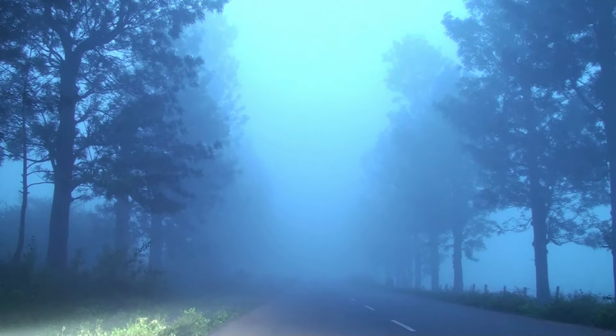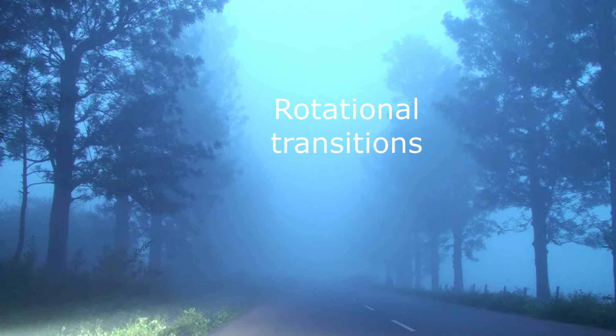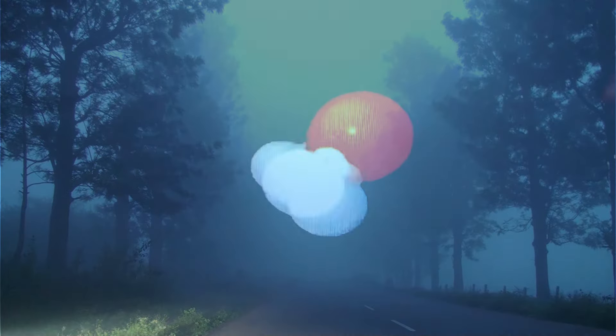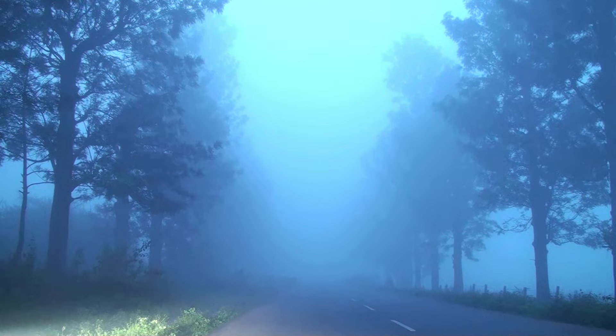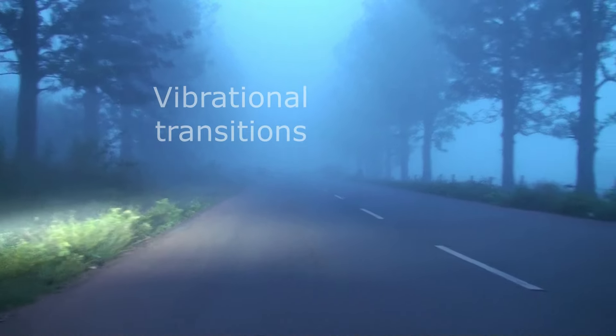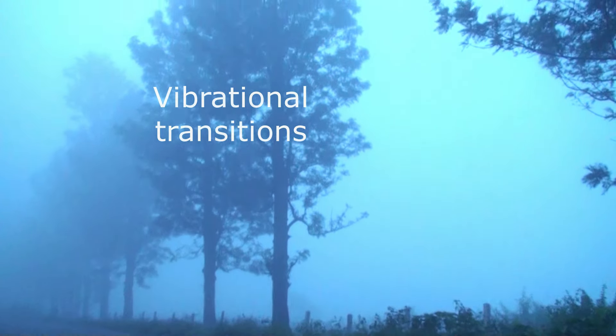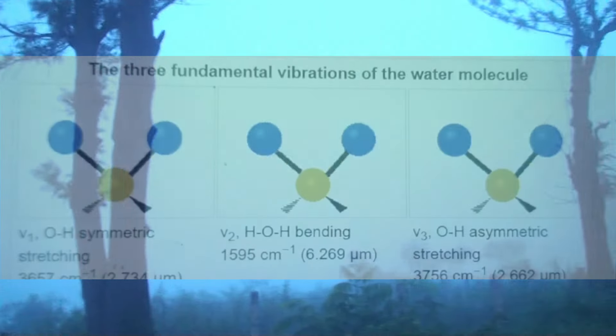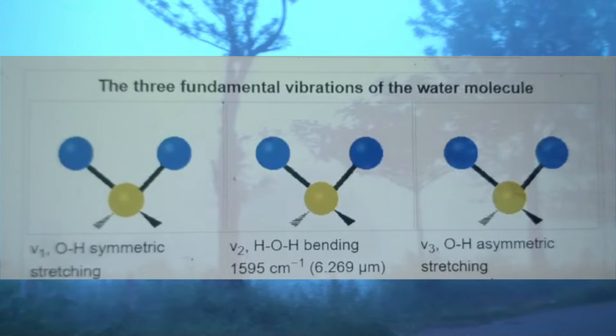Water vapor absorbs light at various wavelengths due to its molecular structure and the types of transitions that can occur within the molecule. Number one is rotational transitions — these occur in the microwave and far infrared regions; water vapor molecules can rotate and these rotational transitions absorb energy at specific wavelengths. Number two is vibrational transitions — these occur in the mid-infrared and near infrared regions; the water molecule can vibrate in different ways such as stretching and bending of the bonds between hydrogen and oxygen atoms.